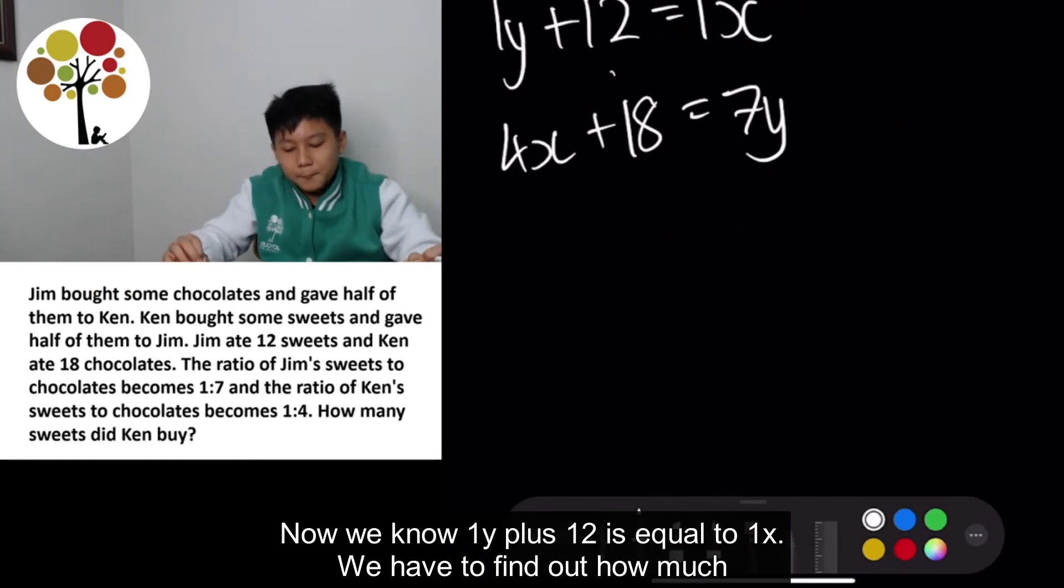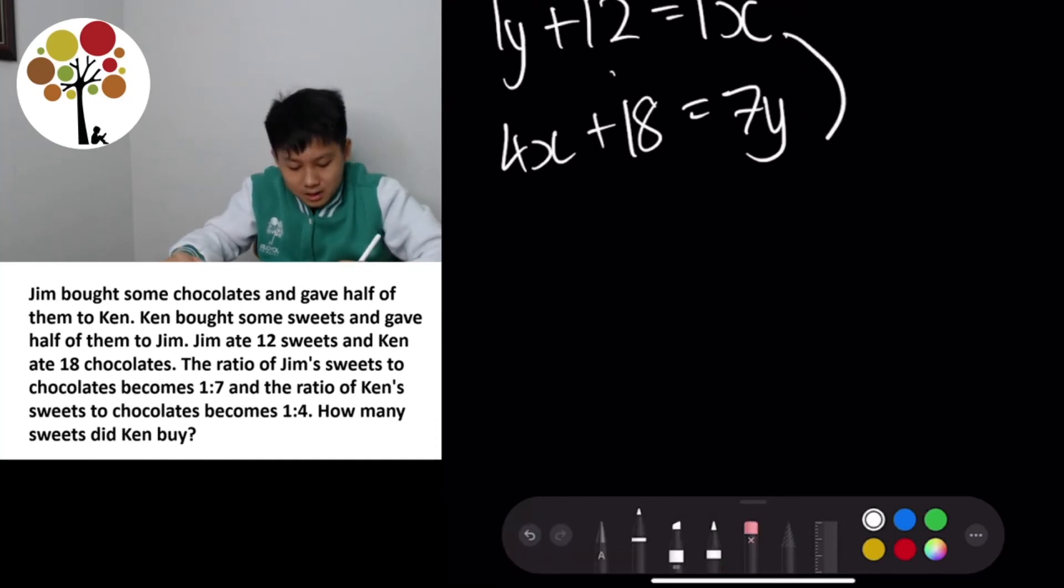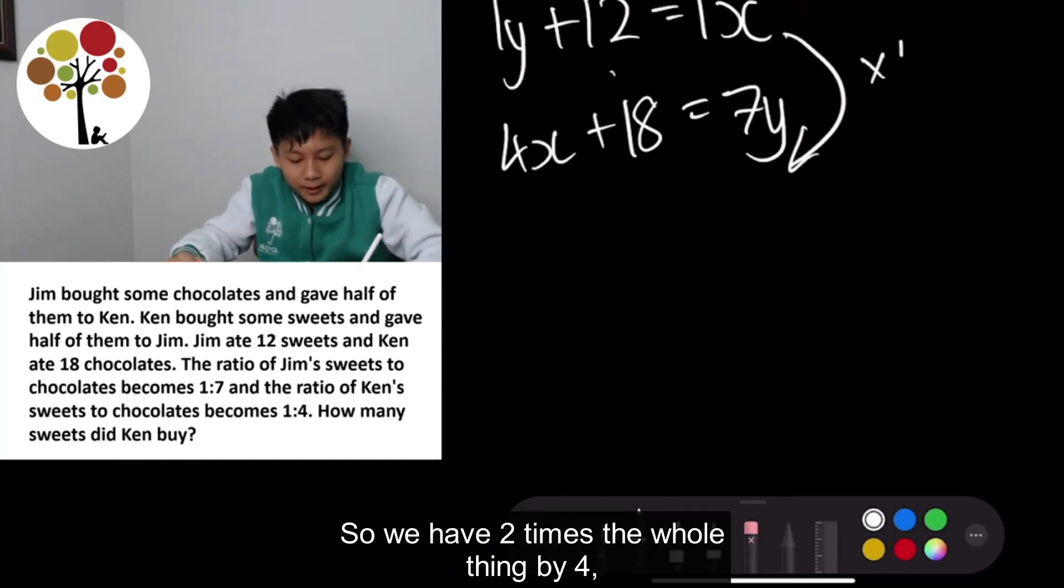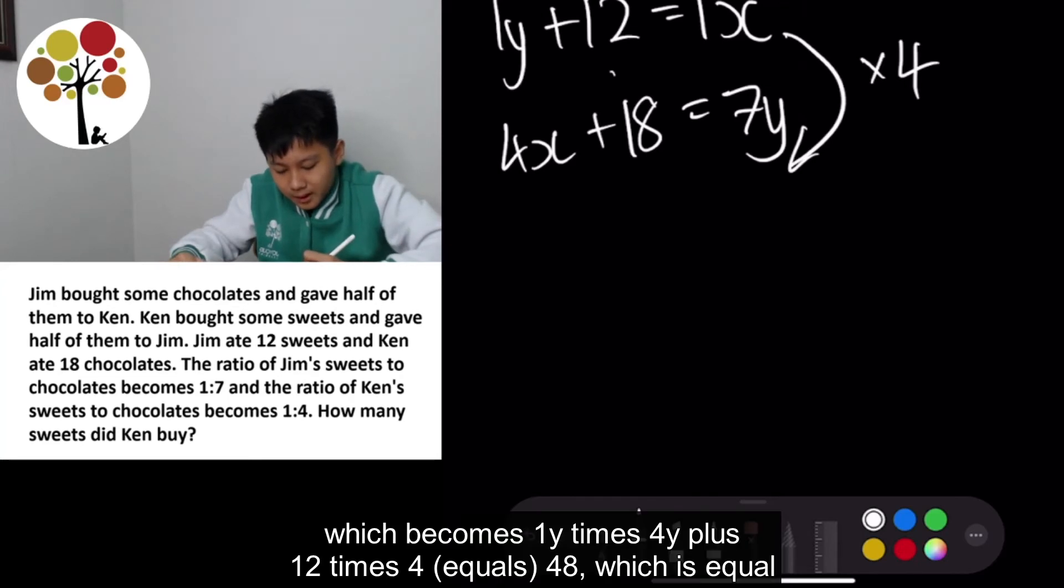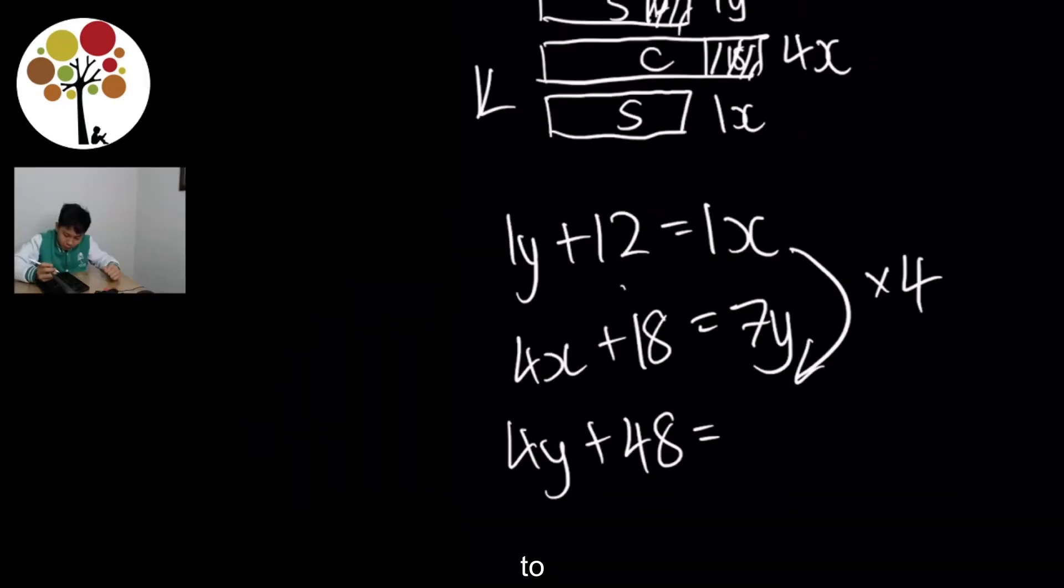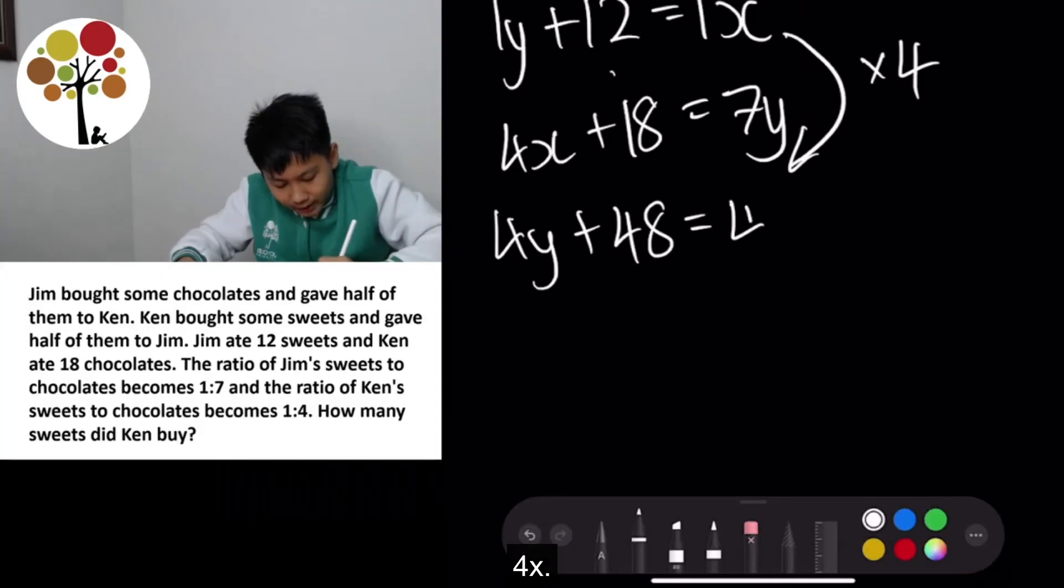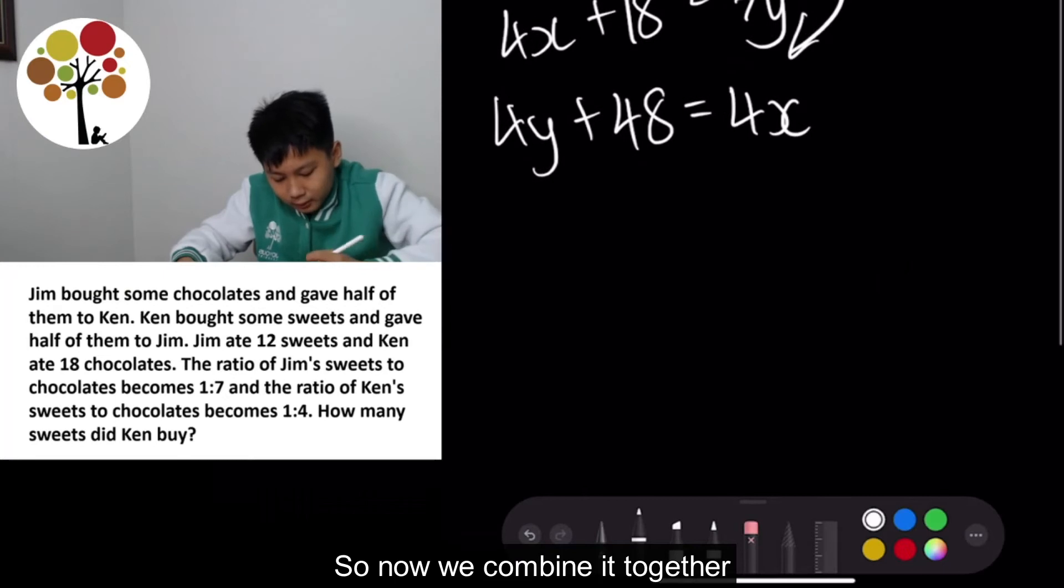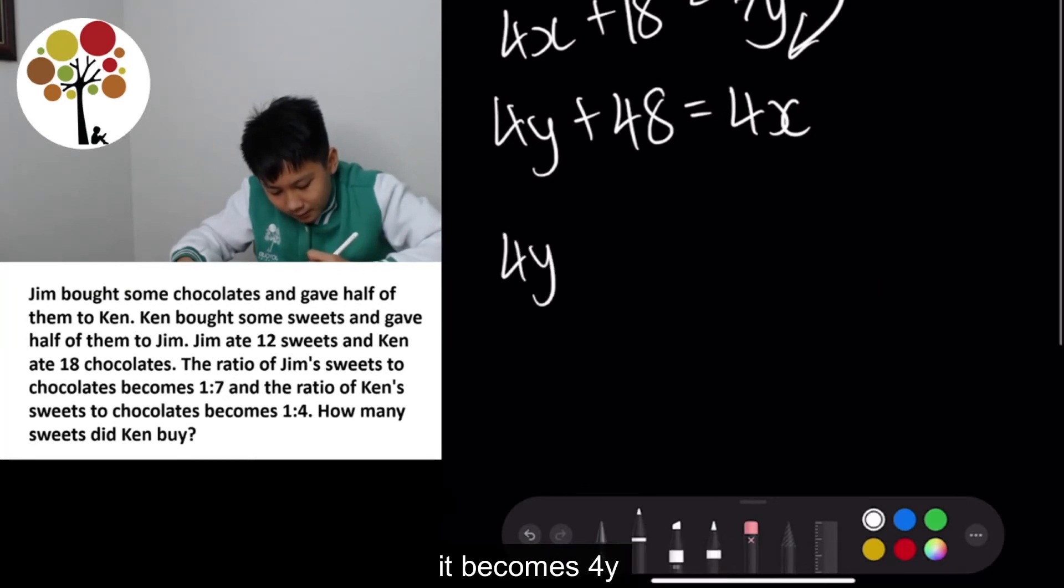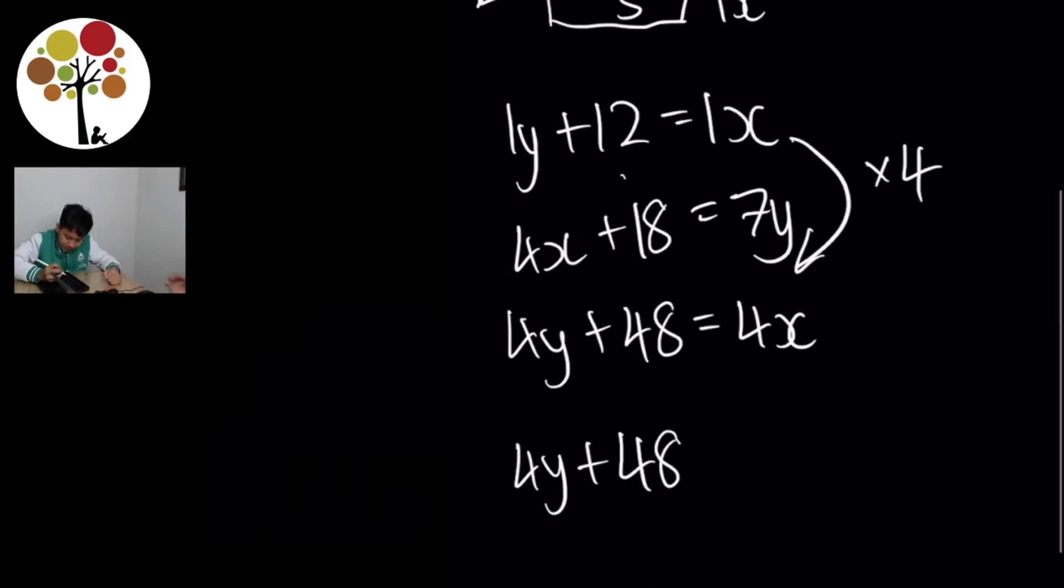Now, we know 1Y plus 12 is equal to 1X. We have to find out how much is equal to 4X. So we have to times the whole thing by 4. Which becomes 1Y times 4, 4Y plus 12 times 4, 48 which is equal to 4X.